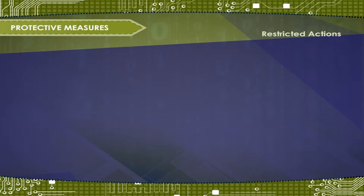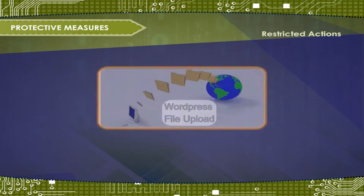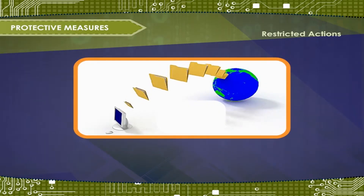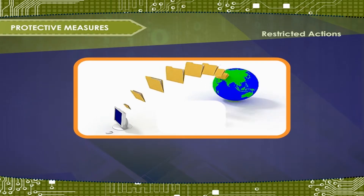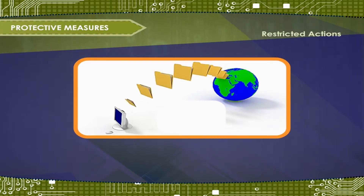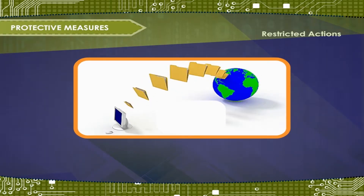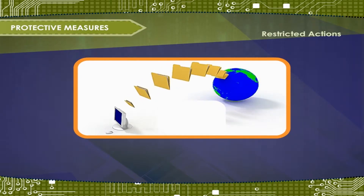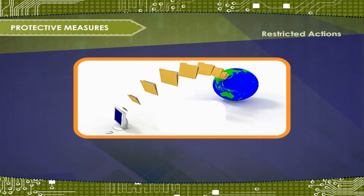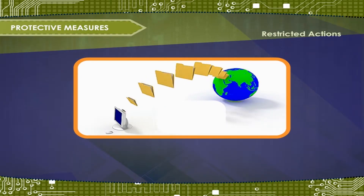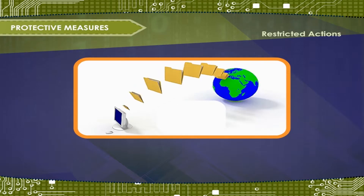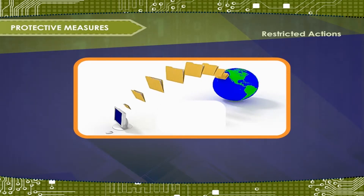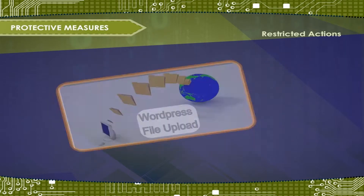Restricted Actions: If you are not sharing files with other computers, then switch off the file sharing. To confirm switching off the file sharing, click on Network Neighborhood and in Properties, immediately click on File and Print Sharing so that it may not get selected.